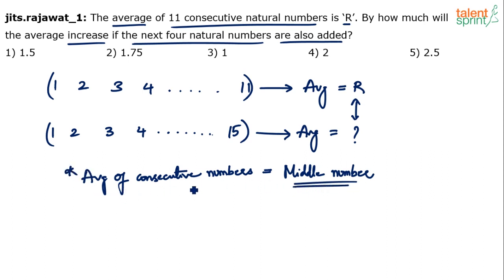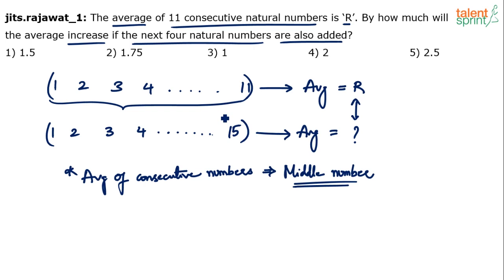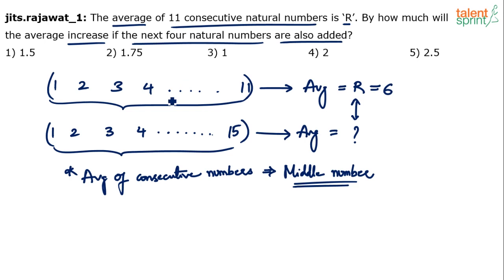The average of consecutive numbers is always the middle number. For numbers 1 to 11, the middle number — the centermost number — is 6. So the average R equals 6. Now for 15 numbers, the middle number: 15 divided by 2 is 7.5, and 11 divided by 2 is 5.5, so we take the next rounded-up number.